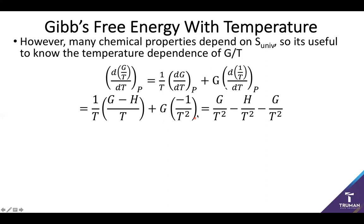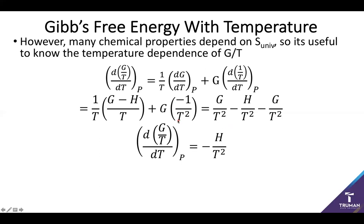We have a bit of a mess on the left side, so we distribute the 1/T and get G/T² minus H/T², and then distributing the G gives negative G/T². Because thermodynamic equations often have terms that conveniently drop out, our two G/T² expressions cancel each other. All we're left with is that the dependence of our universal entropy is going to be dependent on enthalpy and temperature — specifically −H/T².